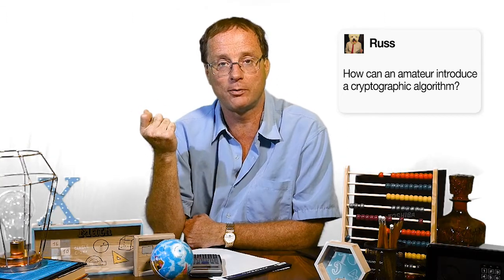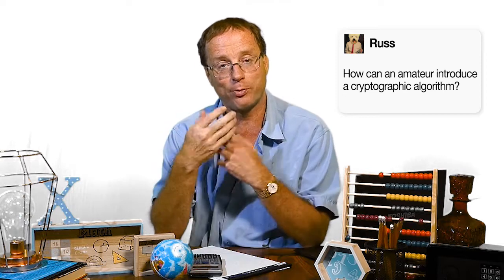Just working out that you can't break it is not good enough — that only shows you can't break it. If we deploy an algorithm, we're not just interested in whether you can break it; we're interested in whether a very large organization or the cleverest minds on the planet can break it. So we need a mathematical proof. Don't patent it, find a good mathematician who understands cryptography to provide that proof.